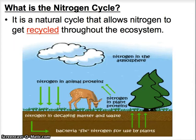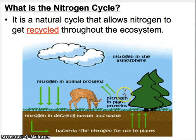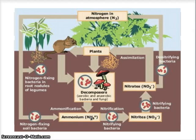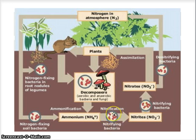The nitrogen cycle is a natural cycle that allows nitrogen to cycle through the ecosystem. We see nitrogen in the atmosphere, in plants and animals, and in the soil and in decaying matter. We're going to be learning about the more complex version of the nitrogen cycle, including the different forms nitrogen can take and the role bacteria plays, as shown in this diagram. There are many different kinds of bacteria that break down different types of nitrogen into different forms.